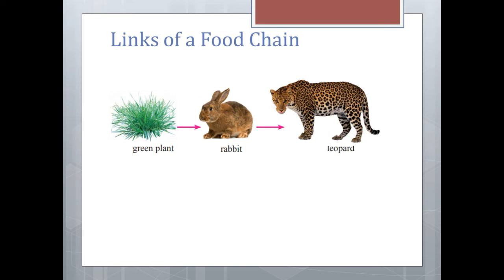Links of a food chain. Now we'll see what are links of a food chain. Here is a simple food chain. The green plant is eaten by the rabbit. The rabbit is eaten by the leopard. In this food chain, green plant is the first unit of this food chain. Rabbit is the second unit of this food chain. And the leopard is the third unit of this food chain.